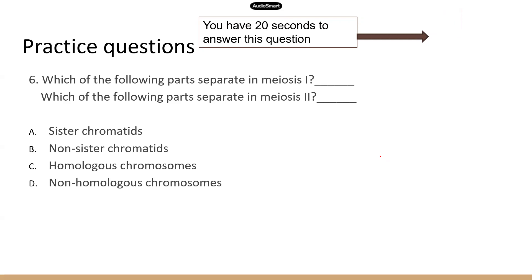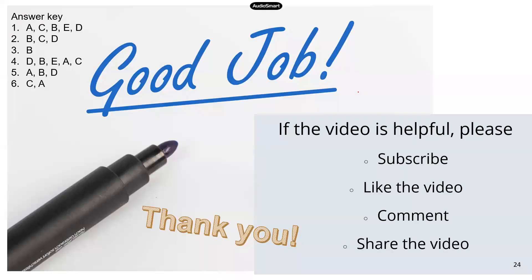The key to differentiating meiosis and mitosis is knowing which chromosomes are split during meiosis I and meiosis II. In meiosis I, the homologous chromosomes are split. In meiosis II, just like mitosis, the sister chromatids are split. That's meiosis — I hope the information is helpful. Thank you for watching.